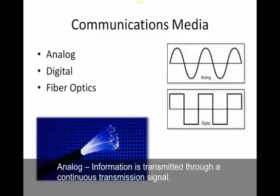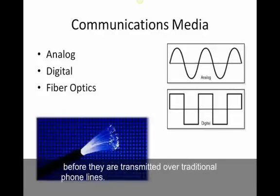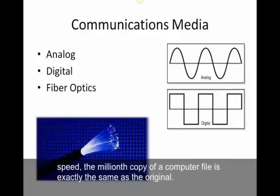Different types of communications media. First, analog — information is transmitted through a continuous transmission signal. A telephone, for example, takes sound vibrations and turns them into electrical vibrations before they're transmitted over phone lines. Digital is more common these days because information is transmitted through ones and zeros — something is either on or off. Digital data is preserved perfectly at high speed, so the millionth copy of a computer file is exactly the same as the original, which is a very nice feature.